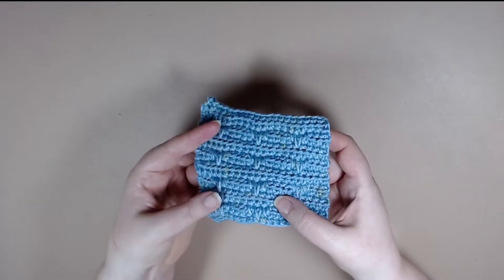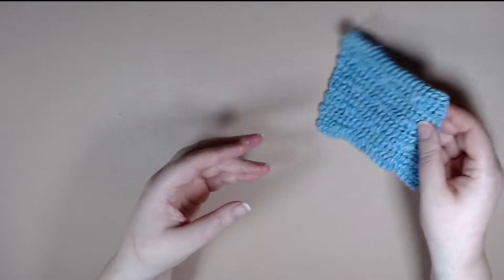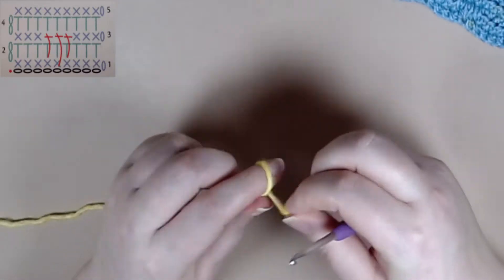For this pattern you'll need to know how to do a double crochet and a half treble crochet. If you need help with that you can check down in the description below for my videos on how to do those stitches.